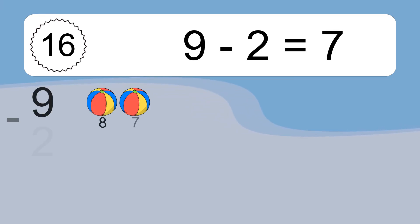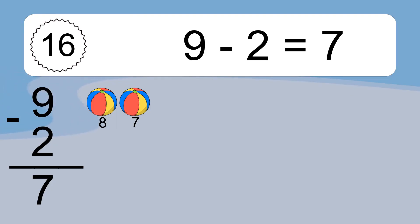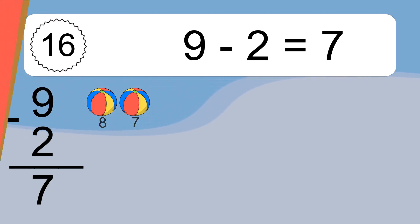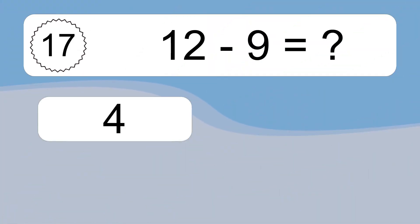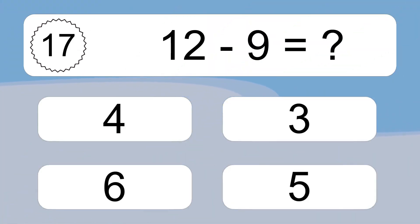9 minus 2 equals what? 9 minus 2 equals 7. Let's count it: 8, 7.